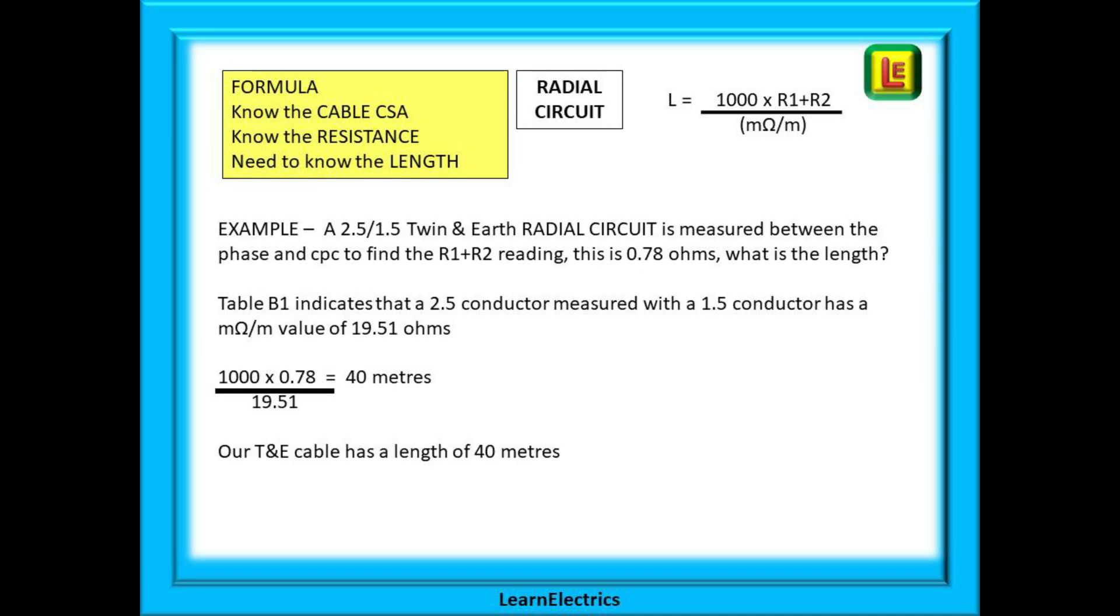Let us now look at a radial circuit and suppose that this is a water heater circuit wired in 2.5 1.5 twin and earth cable. We measure it and we find the resistance, the R1 plus R2, to be 0.78 ohms. So how long is the circuit?